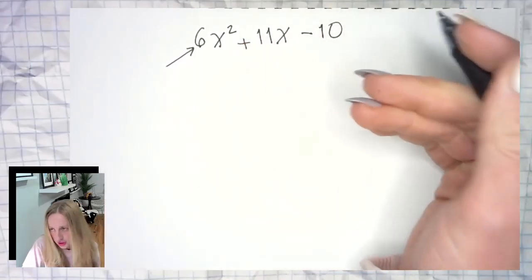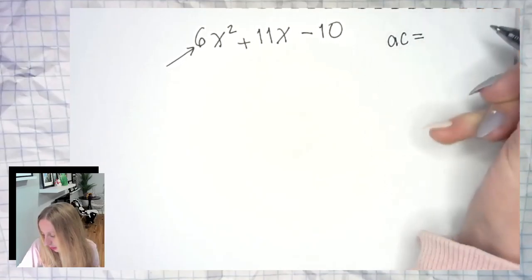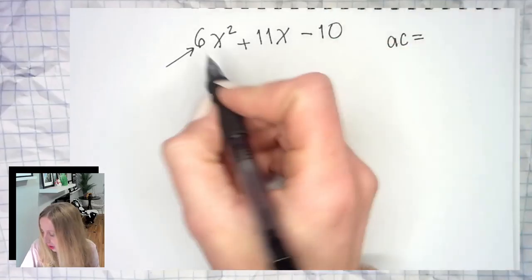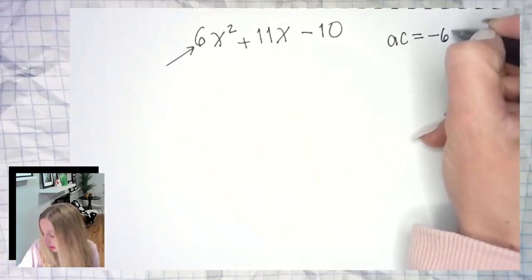So first and foremost you always got to check for a GCF, pull out those GCFs, put them out front. We don't have one here, but then we're going to take the a and the c and we're going to multiply them. This is a surefire way to get your answer. Six times negative 10 is negative 60.